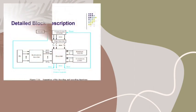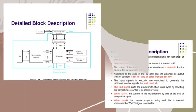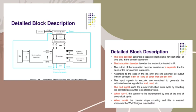The detailed block description consists of the step decoder, which generates a separate block signal for each step or time slot in the control sequence. The instruction decoder decodes the instruction loaded in IR. The output of the instruction decoder consists of a separate line for each of the M machine instructions.